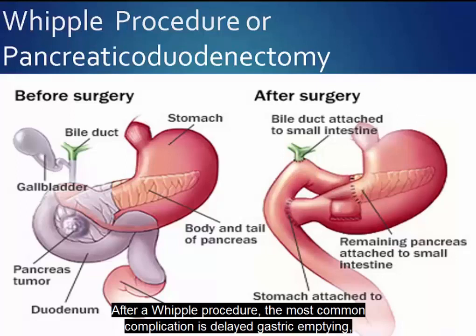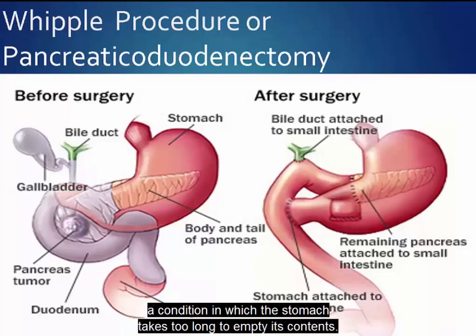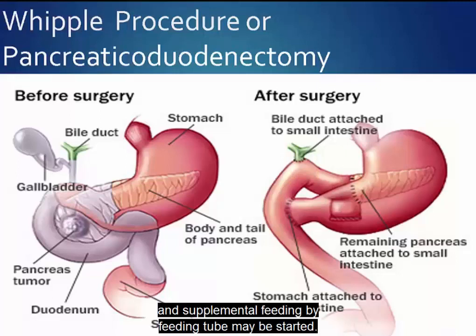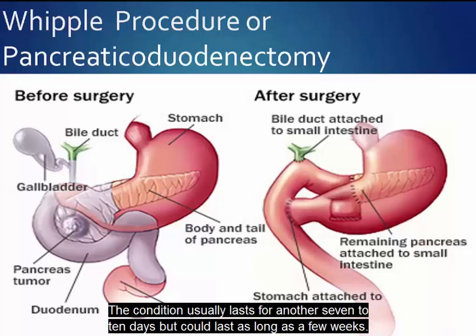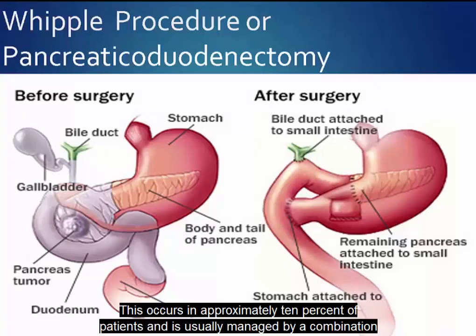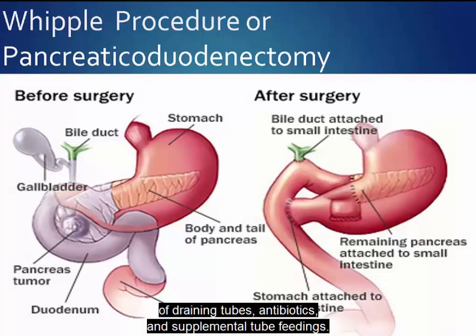After a Whipple procedure, the most common complication is delayed gastric emptying, a condition in which the stomach takes too long to empty its contents. Usually after 7 to 10 days the stomach begins to work properly. If delayed gastric emptying persists, supplemental feeding by a feeding tube may be started, and the condition usually lasts another 7 to 10 days but could last a few weeks. The most serious potential complication is abdominal infection due to leakage where the pancreas has been connected to the intestine. This occurs in approximately 10% of patients and is usually managed by a combination of draining tubes, antibiotics, and supplemental tube feedings.